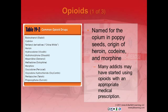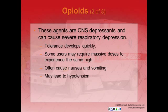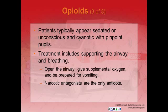Opioids are named for opium in poppy seeds and are the origin of heroin, codeine, and morphine. Synthetic opioids include meperidine (Demerol), hydromorphone (Dilaudid), and oxycodone hydrochloride (OxyContin). Many addicts may have started with a legitimate medical prescription. These agents are CNS depressants and can cause severe respiratory depression. Tolerance develops quickly, requiring massive doses for the same effect. They cause nausea, vomiting, and hypotension. Patients typically appear sedated or unconscious and cyanotic, with pinpoint pupils — the most commonly accepted sign of opiate abuse.